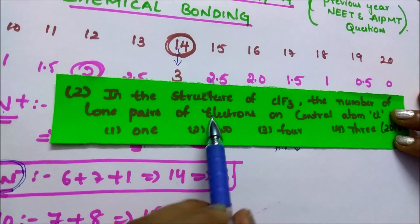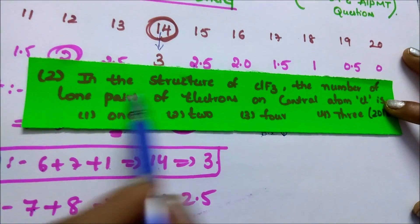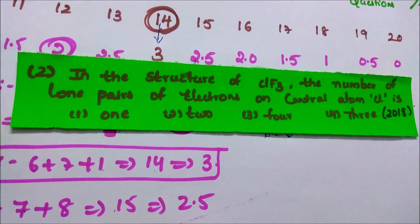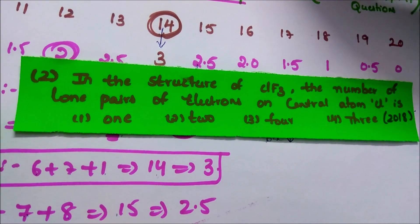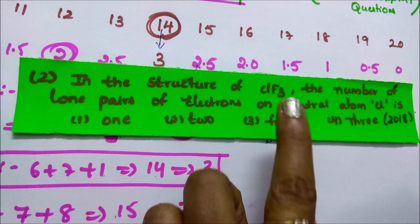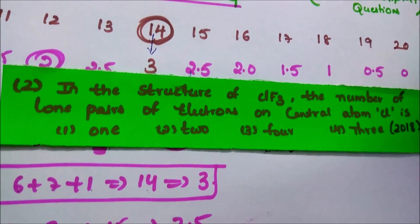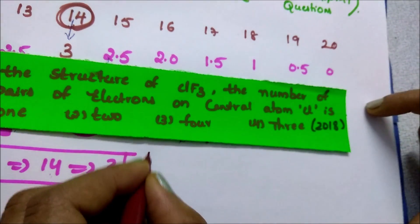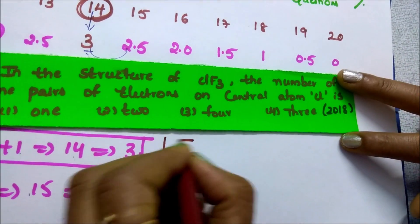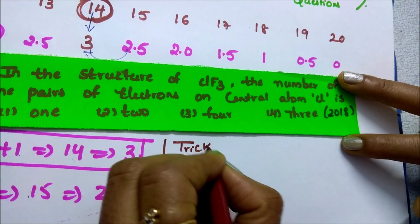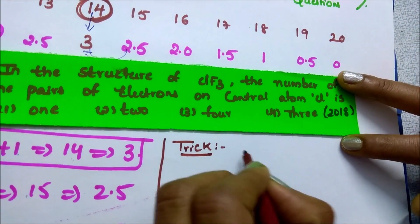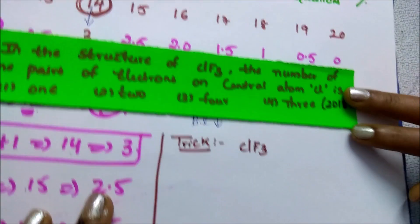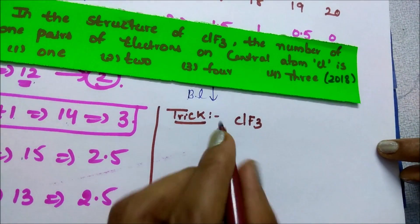See the next question: in the structure of ClF3, what is the number of lone pairs of electrons on the central atom, chlorine? I will teach you a shortcut. The trick is to find hybridization. The central atom in ClF3 is the least electronegative atom, which is chlorine. Chlorine is in the 7th A group, or 17th group.